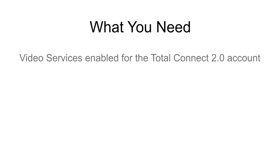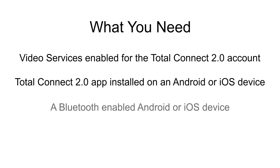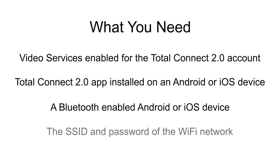Before we start, there are several things you'll need. You need video services to be enabled for the Total Connect 2.0 account. You also need the Total Connect 2.0 app installed on an Android or iOS device. The device needs to be Bluetooth ready, and you will need the SSID and password of the network that the camera will be connected to. If you need to, please pause the video now to get everything ready.